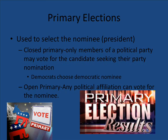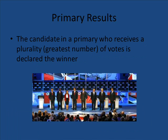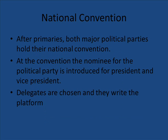After the primary happens, the person who has plurality — which means the greatest number of votes — is declared the winner. At the national convention, they are introduced to their political party and the delegates are chosen. After the delegates are chosen and the nominee is introduced, together they work to create a platform for that political party, and then it's on to the actual campaigning for the general election, which will name the winner of the presidential election.